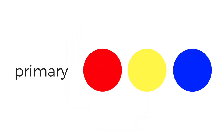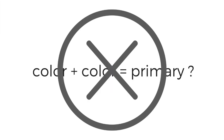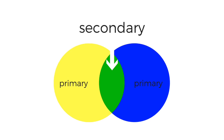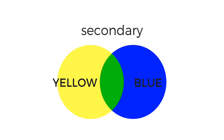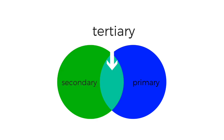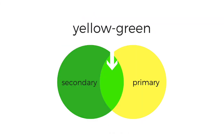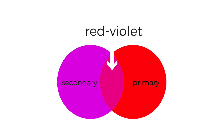Primary colors are red, yellow, and blue — two other colors cannot make a primary color. Two primary colors mixed together equals a secondary color; for example, blue plus yellow equals green. A tertiary color is a secondary and a primary mixed together, which mostly means the hyphenated colors: yellow-green, blue-green, red-violet.